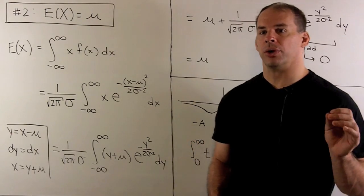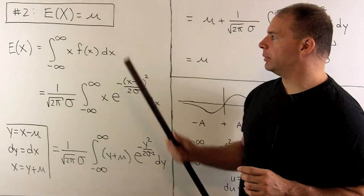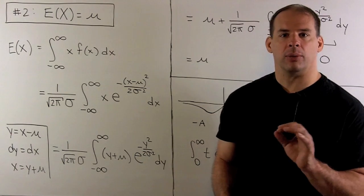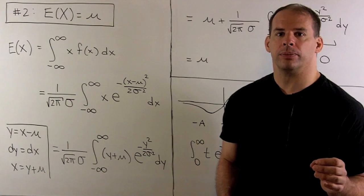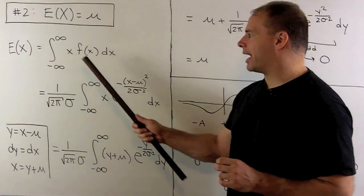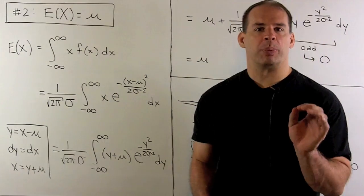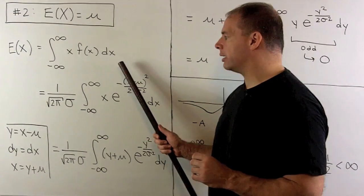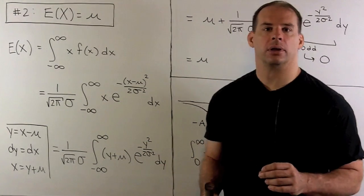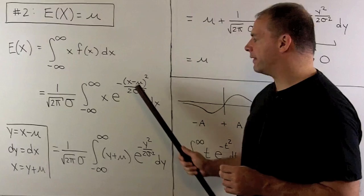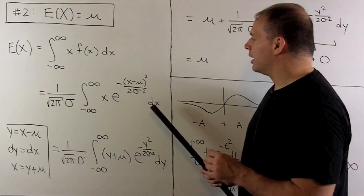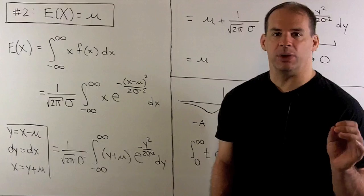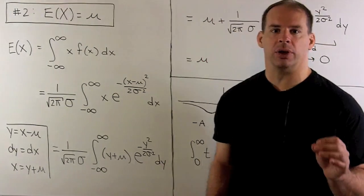Next, we show that the mean of our distribution is equal to μ. So we take our density function, multiply by x, then we integrate over the real line. Because x times f(x) has both positive and negative values, we'll have to worry about whether this integral converges or not. We put in for f(x), then I substitute y equals x minus μ. So dy equals dx, and x equals y plus μ.